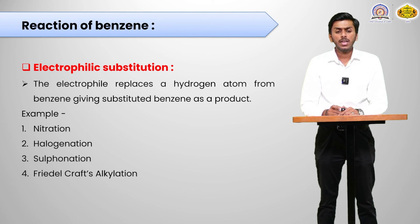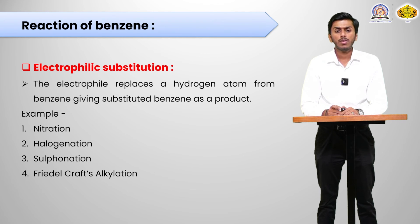Now we will discuss the reactions of benzene. Under electrophilic conditions, an electrophile replaces a hydrogen atom from benzene, giving a substituted benzene product. Examples of electrophilic substitution are nitration, halogenation, sulfonation, and Friedel-Crafts acylation. In nitration, the hydrogen atom is replaced by an NO2 group. In halogenation, hydrogen is replaced by a halide — fluorine, chlorine, bromine, or iodine.